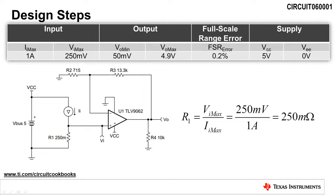The first design step is to calculate the maximum shunt resistance, R1, based on the maximum load current of 1 amp and maximum shunt voltage of 250 millivolts. To do this, we simply divide the maximum shunt voltage by the maximum load current, which yields a value for R1 of 250 milliohms.